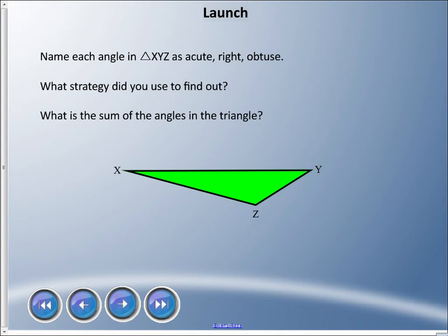I don't know if you see that triangle symbol, but in geometry we just make a little triangle to say it's a triangle, and it's called XYZ because that's the line segments in the triangle. If you could name each angle in XYZ as acute, right, or obtuse, what strategy would you use to do that? And just as a little bit of review, what is the sum of the angles in the triangle?